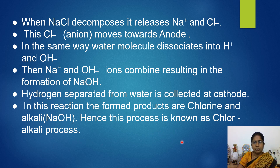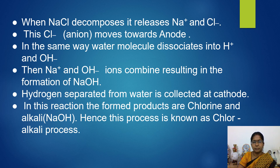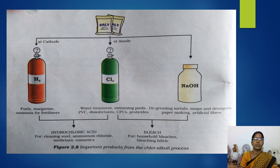This process is known as the chloralkali process because chlorine is released along with alkali — NaOH. Looking at the figure, the main products prepared from the chloralkali process are hydrogen gas, chlorine gas, and NaOH. These products are useful in many ways.